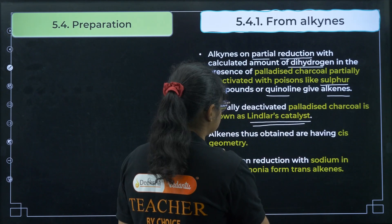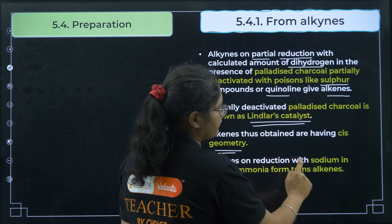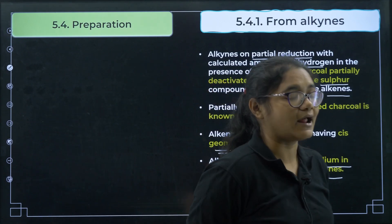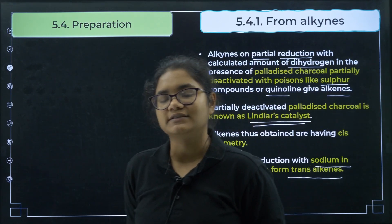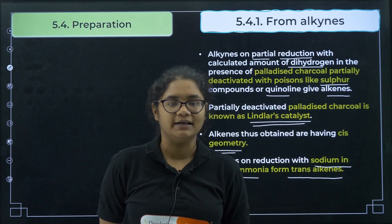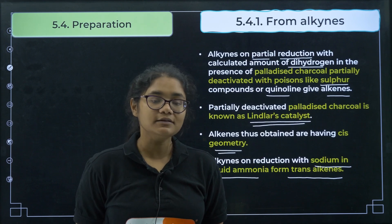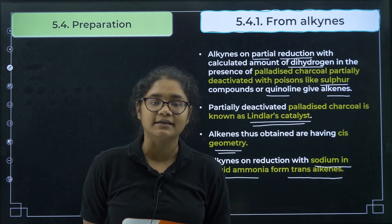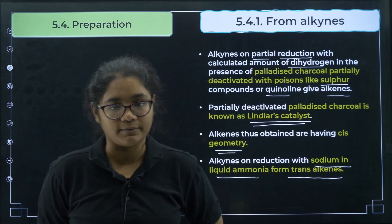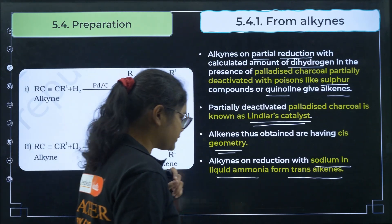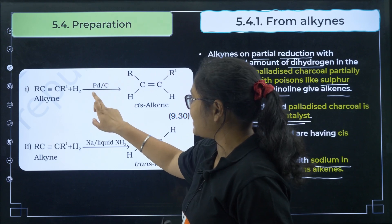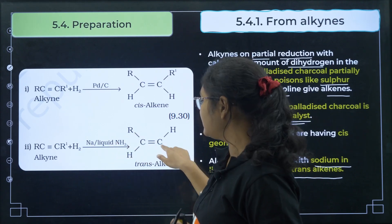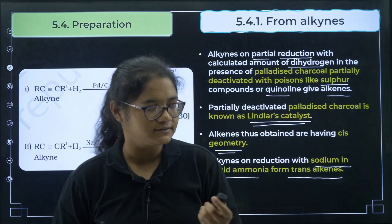Alkynes thus obtained using Lindlar's catalyst have cis geometry. However, alkynes on reduction with sodium in liquid ammonia form trans-alkenes. So from the same alkyne: using H2/Pd-C (Lindlar's catalyst) gives cis-alkene; using Na in liquid NH3 gives trans-alkene. By changing the reagent, we get different products.